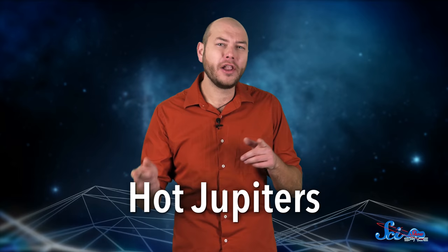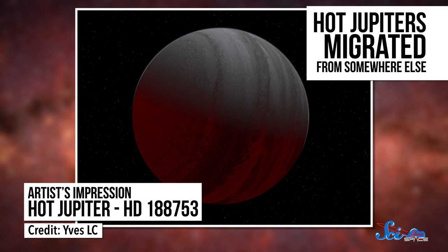As astronomers collected more data, they started to find more and more of these big gas planets, which we now call Hot Jupiters, close to their stars. They realized that Hot Jupiters migrated from somewhere else, and they started trying to figure out how. Since then, they've come to realize that planets can actually move around a lot in their early lives.